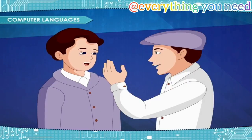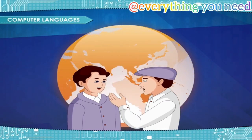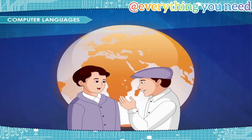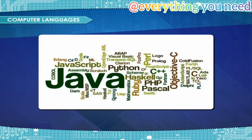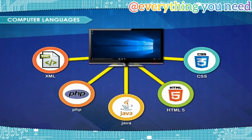Computer languages. Humans use language to communicate and different regions have different languages. Computers also have their own languages. The term computer language includes a wide variety of languages used to communicate with computers. Different kinds of languages have been developed to perform different types of work on the computer.